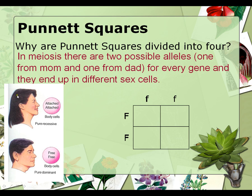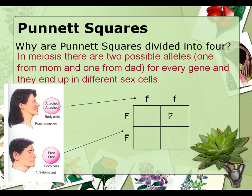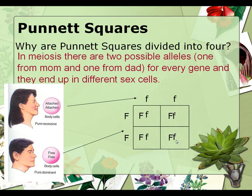Here we have a homozygous recessive mother with two recessive alleles, and a homozygous dominant father with two dominant alleles. Filling in the Punnett square is fairly easy — we'll start with one letter and move it across or down into both boxes. We distribute the father's alleles across the top and bring the lowercase letters down. This represents the egg and the sperm fusing to create a child. These four boxes represent the possible combinations between this mother and father — these are the possible genotypes of the offspring.